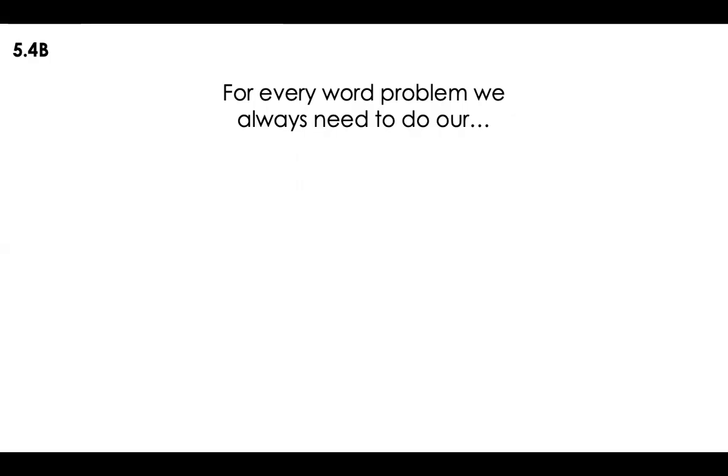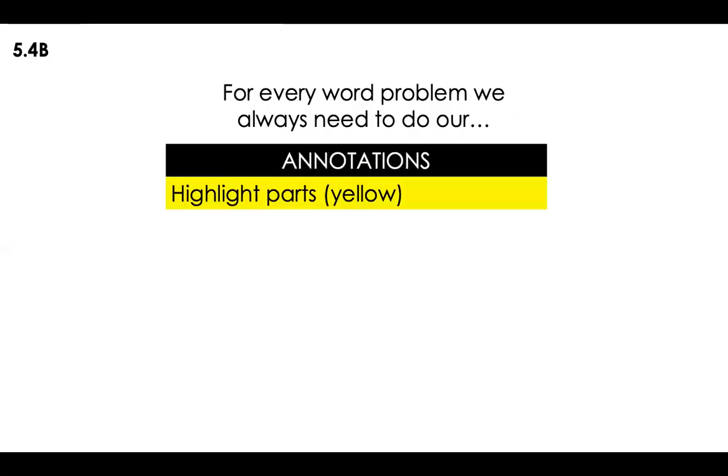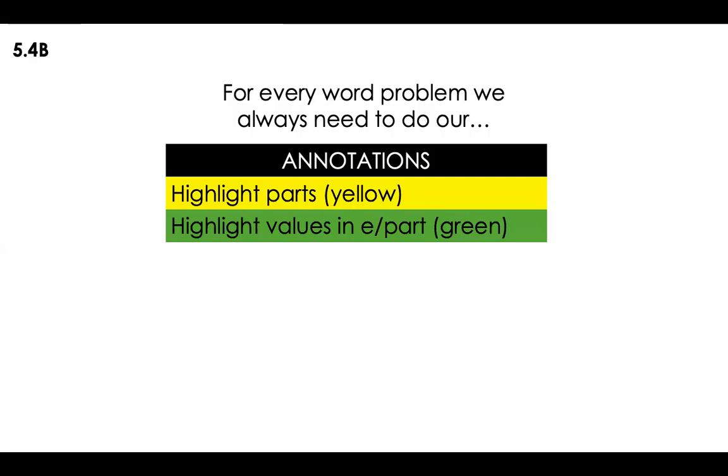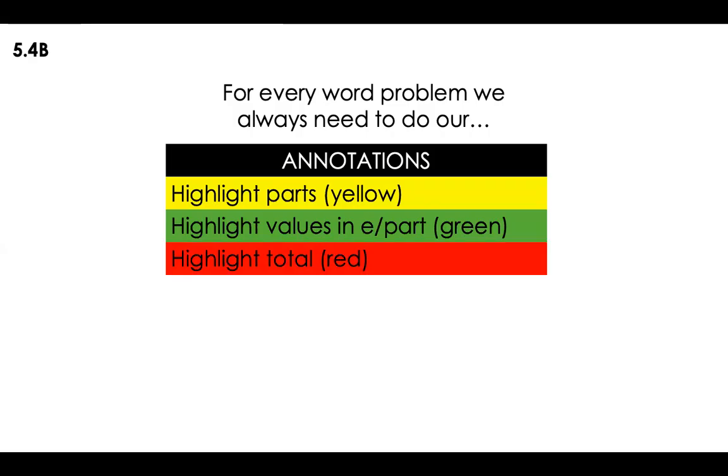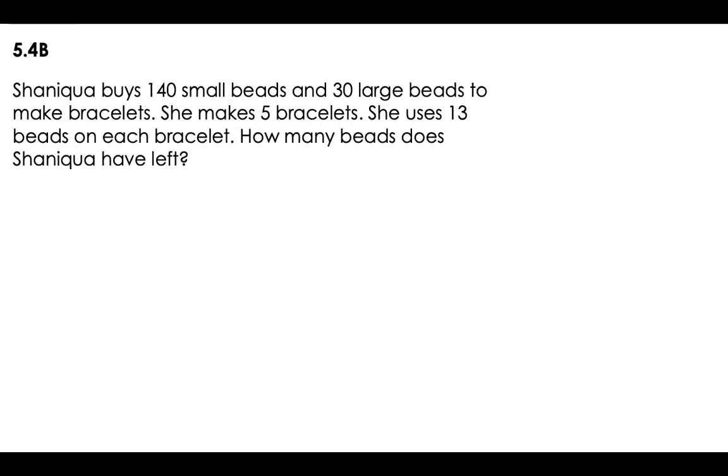For every word problem, we always need to do our annotation. We're going to highlight the parts in yellow, the values in each part in green, and we're going to highlight the total. Of course, we'll have to underline our question. Now, let's read.